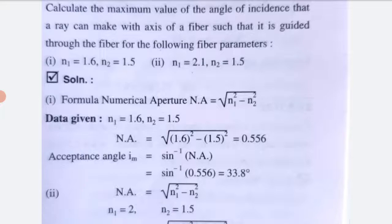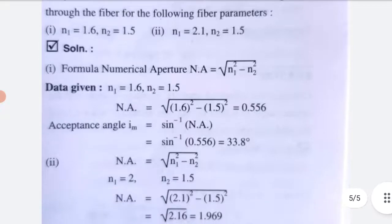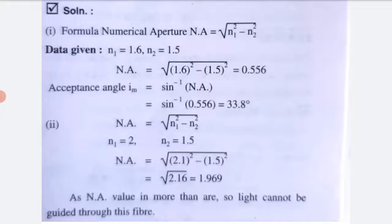Case 2: N1 = 2.1, N2 = 1.5. Numerical aperture NA = √(N1² − N2²) = √(2.1² − 1.5²) = √(4.41 − 2.25) = √2.16 ≈ 1.469. Since the numerical aperture value is greater than 1, light cannot be guided through this fiber.